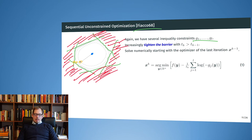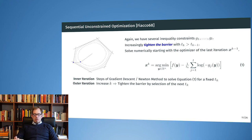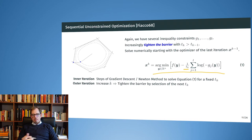This is an iterative method with two levels: inner iterations — for example gradient descent or Newton steps — solve the optimization problem for a fixed t, producing result x_k. Then an outer step takes x_k as the starting point for the next iteration k+1, increases t, and tightens the barrier. The inner optimization problem is then recomputed starting from the previous solution.